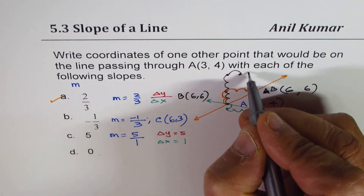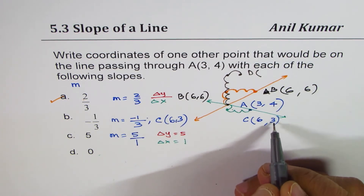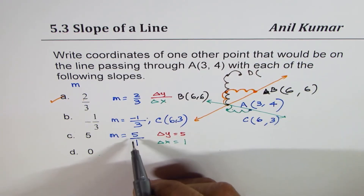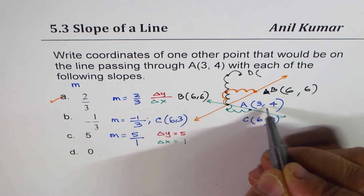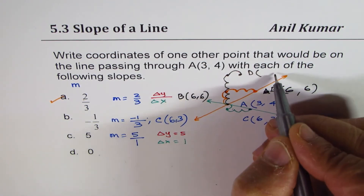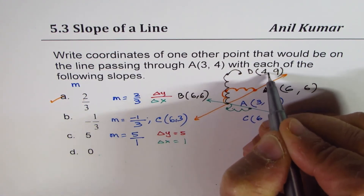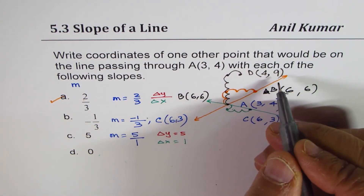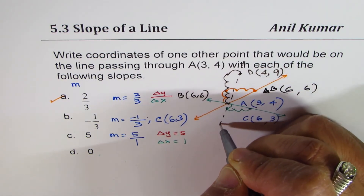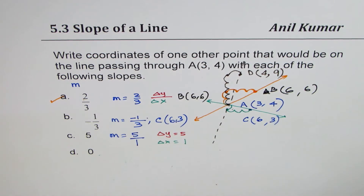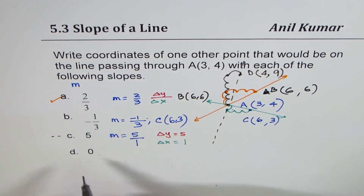That gives us point D. The y value is 5 more than 4, so y = 9, and x is 1 more than 3, so x = 4. The coordinates of point D are (4, 9), and a line can be drawn joining A and D. That becomes the line for slope 5.